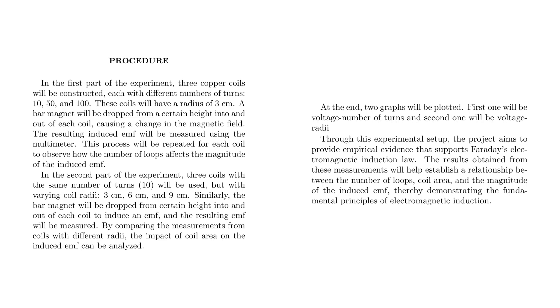In the first part of the experiment, three copper coils will be constructed, each with different numbers of turns: ten, fifty, and a hundred. These coils will have a radius of three centimeters. A bar magnet will be dropped from a certain height into and out of each coil, causing a change in the magnetic field. The resulting induced EMF will be measured using the multimeter. This process will be repeated for each coil to observe how the number of loops affects the magnitude of the induced EMF.